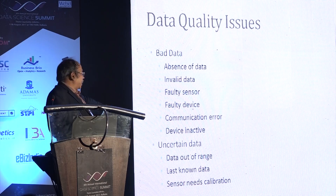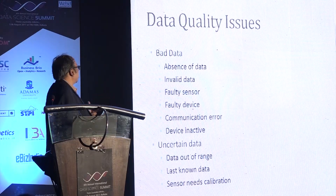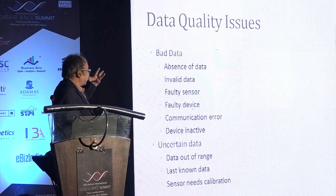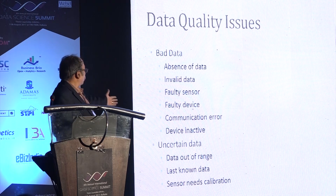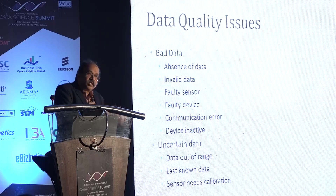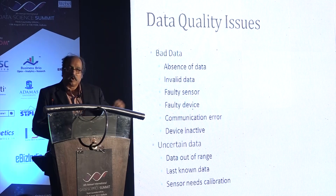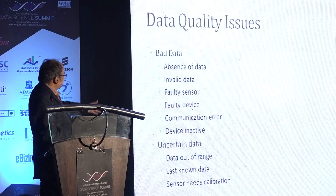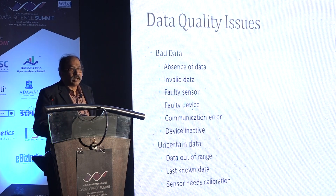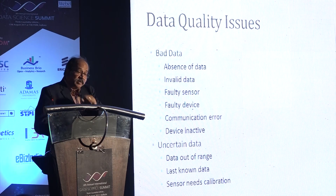A very important issue is the quality of data. A sensor may not be sending data, may be sending invalid data, may be faulty, a device may be faulty, there could be a communication error, or a device may be generally inactive. All this information needs to go along with the data to the data scientists so they don't make wrong conclusions. Similarly, data could be uncertain, out of range, or the sensor might be out of calibration — all of this the data science team needs to deal with effectively.